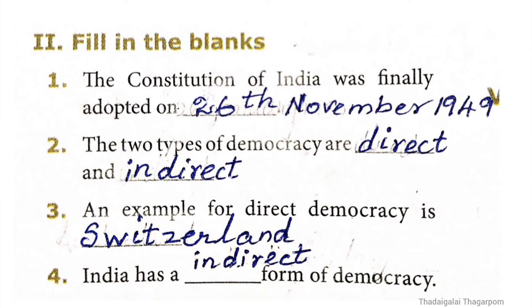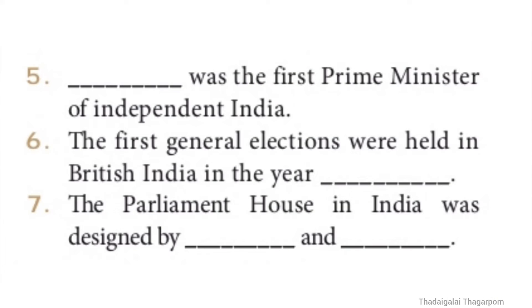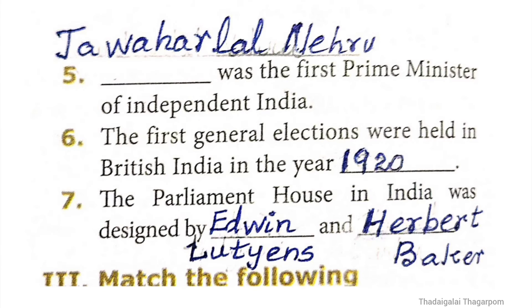Third question: an example for direct democracy is Switzerland. Fourth question: India has an indirect form of democracy. Fifth question: Jawaharlal Nehru was the first Prime Minister of independent India. Sixth question: the first general elections were held in British India in the year 1920. Seventh question: the Parliament House in India was designed by Edwin Lutyens and Herbert Baker.